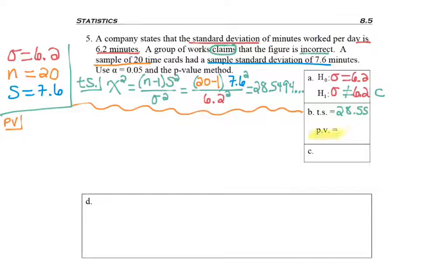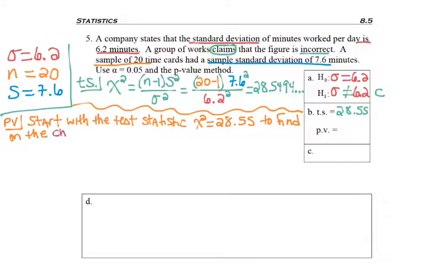Okay, I need to find the p-value method, which is in the question. So for the p-value method, we start with the test statistic, which in our case, remember our test statistic is chi squared equals 28.55. And I start with the test statistic, and I need to find it on the chi squared table. Now why did I say the chi squared table? Because we just found a chi squared test statistic.